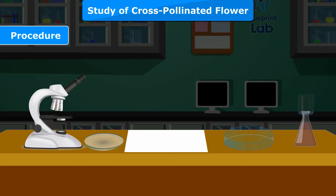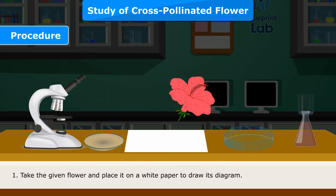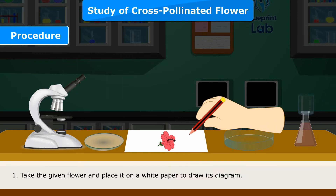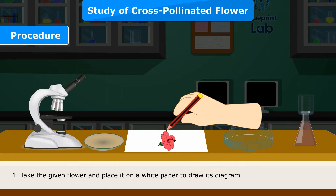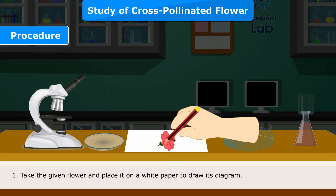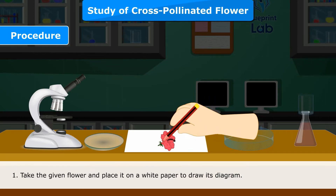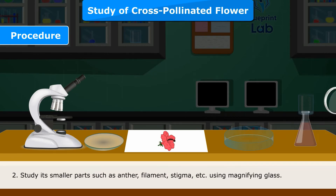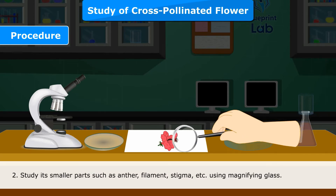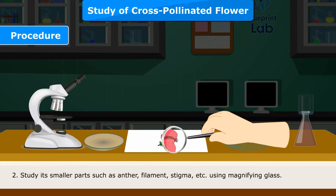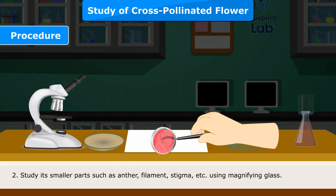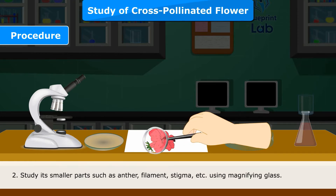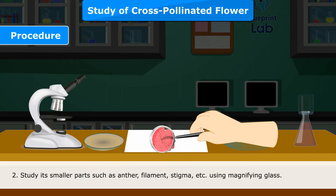Procedure: Step 1 — Take the given flower and place it on a white paper to draw its diagram. Step 2 — Study its smaller parts such as anther, filament, stigma, etc., using a magnifying glass.